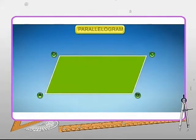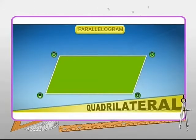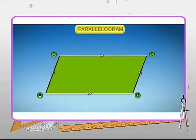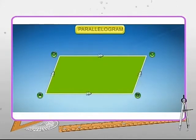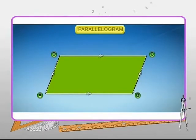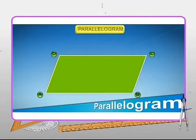Let's now see what a parallelogram is. It's a type of quadrilateral with two pairs of opposite sides parallel. In the figure shown here, AB is parallel to DC and AD is parallel to BC.